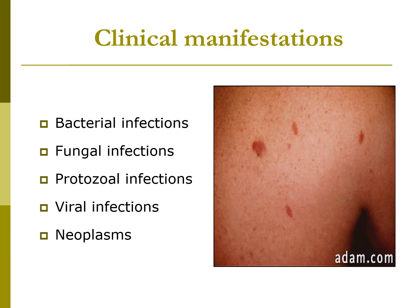Clinical manifestations of HIV and AIDS include bacterial infections such as Mycobacterium avium intracellulare, fungal infections such as Candida, cryptococcus, and histoplasmosis, protozoal infections such as cryptosporidium, pneumocystis, and toxoplasmosis, viral infections such as CMV and herpes, and neoplasms such as Kaposi's sarcoma.